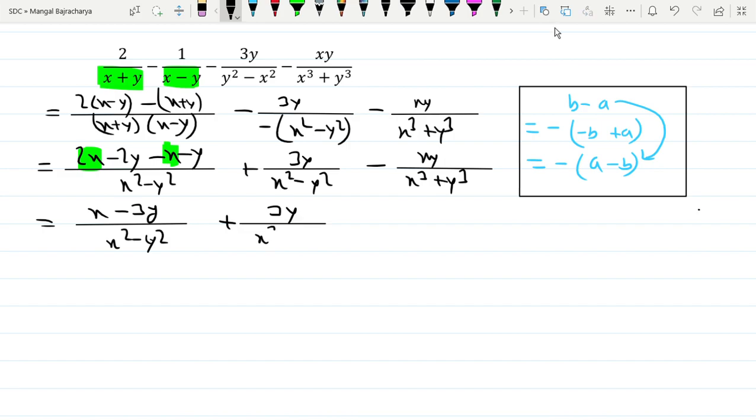...x² minus y² is this. And minus xy divided by x³ plus y³ is the same charge. So the order, the denominator is the same. So the square, same, same thing. Same common factor x² minus y² are the same.